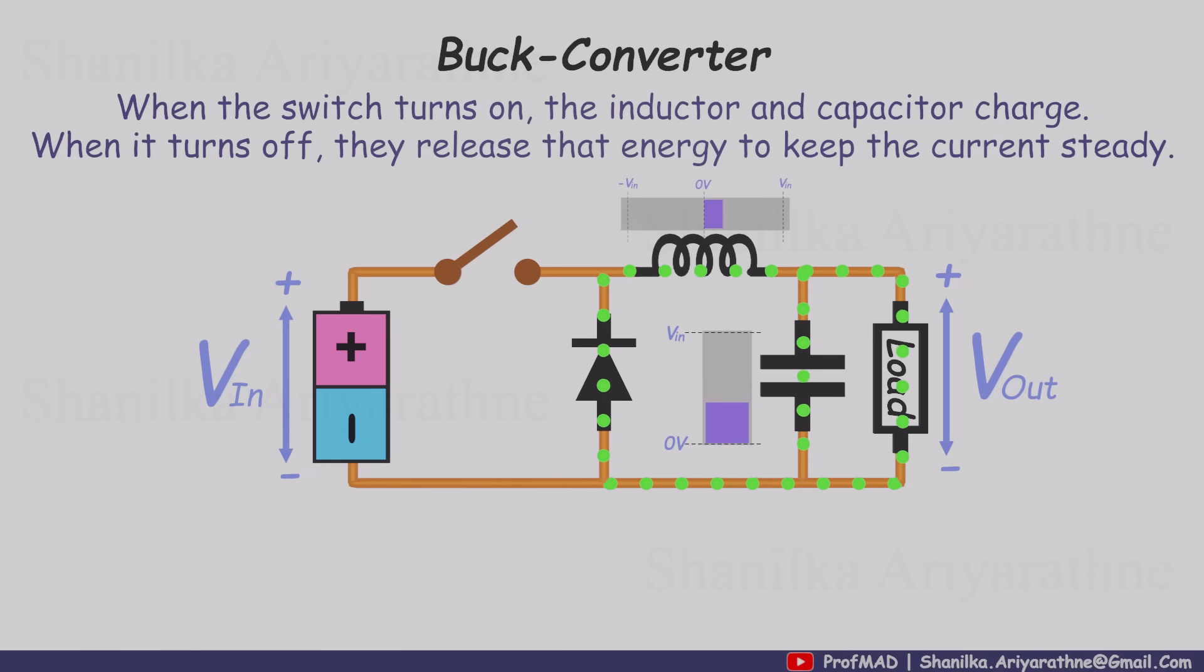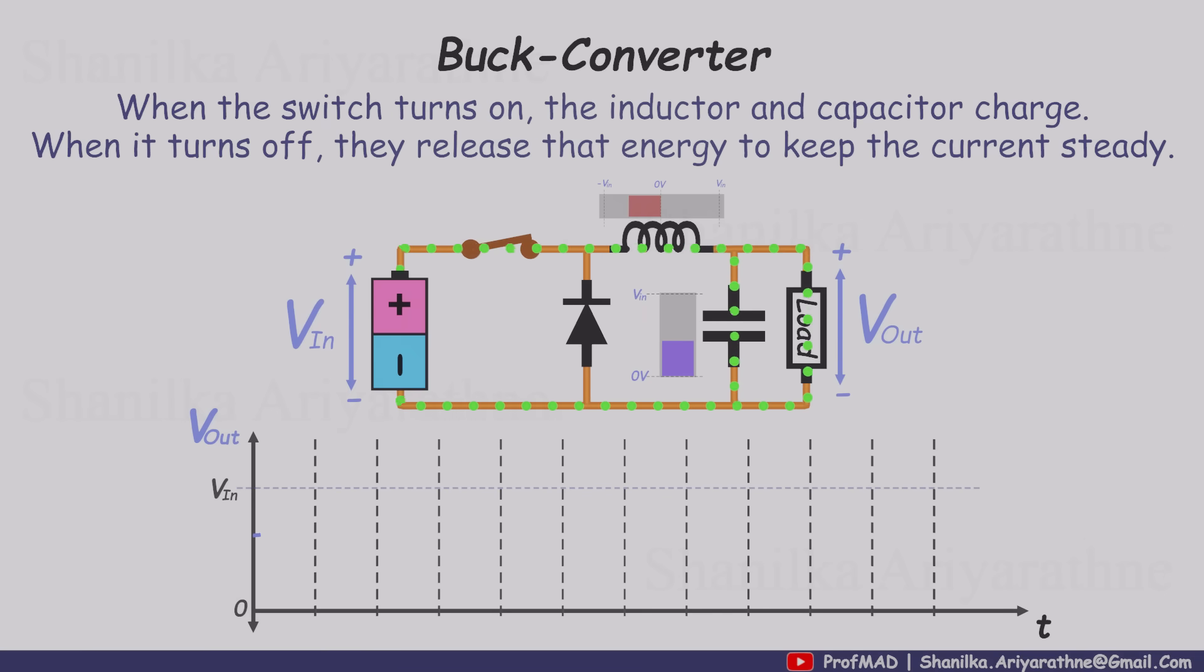With the two working together, the voltage across the load now looks almost like pure DC, with only a tiny ripple left. And that's the magic of a buck converter. It rapidly switches energy on and off, then shapes it with an inductor and a capacitor to give us exactly the voltage we want, with almost no wasted power.